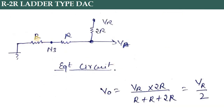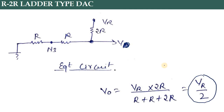Removing the network one stage at a time: R parallel with R gives R/2, then that in series gives 2R, and 2R parallel with 2R gives R again. Finally, looking at the output node, V0 equals Vr times 2R divided by (R + R + 2R). By the voltage divider rule, V0 equals Vr divided by 2. So the maximum voltage at the output is always Vr/2.